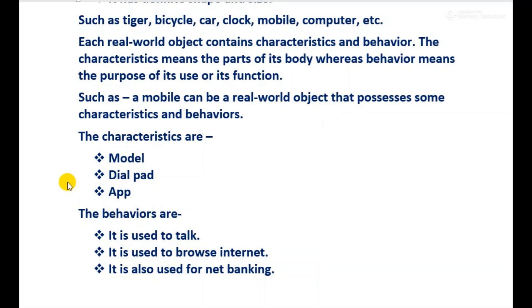We can take one more example — a table as a real world object. The characteristics of a table are: it has a plain glass top, it has four legs, and it is made of wood. The behaviors or uses of a table are: it is used to keep copies and books, it is used for study purposes, and it is used to keep glasses and plates. From these examples we can understand the meaning of characteristics and behavior of any real world object.